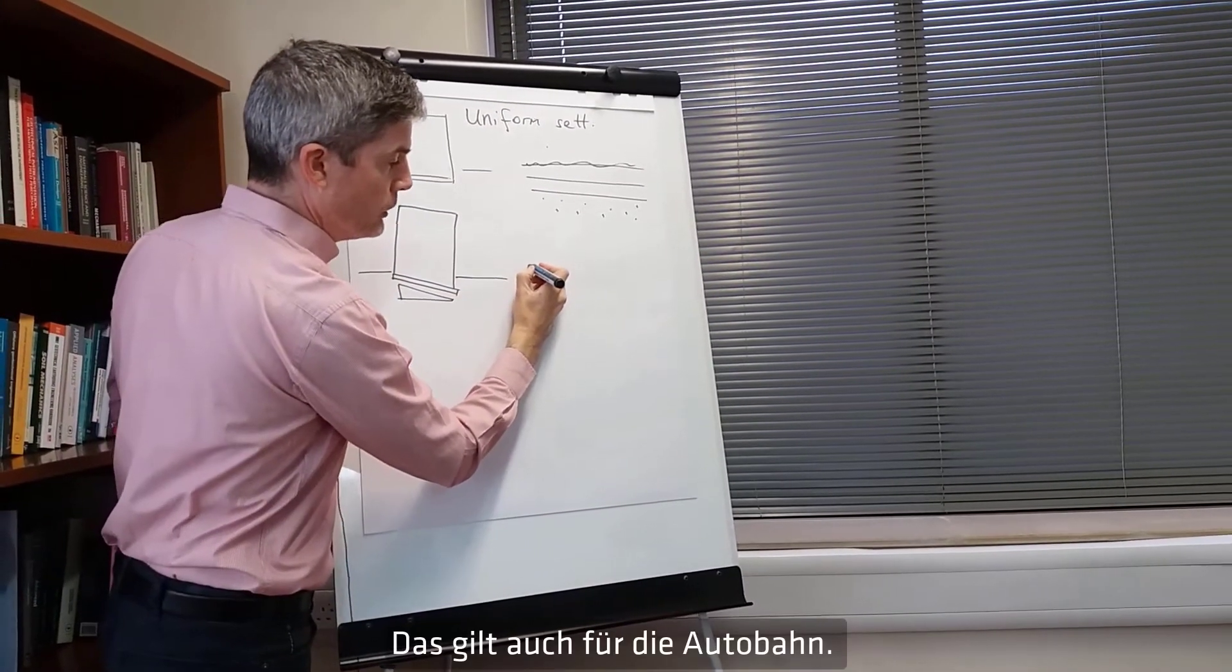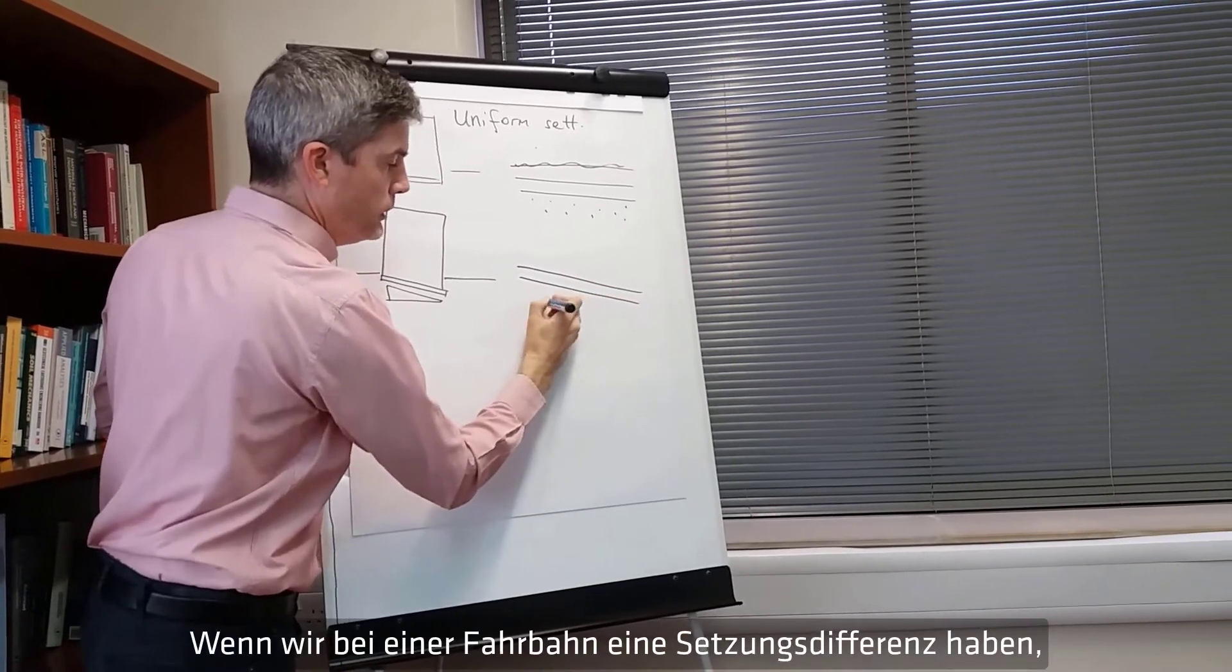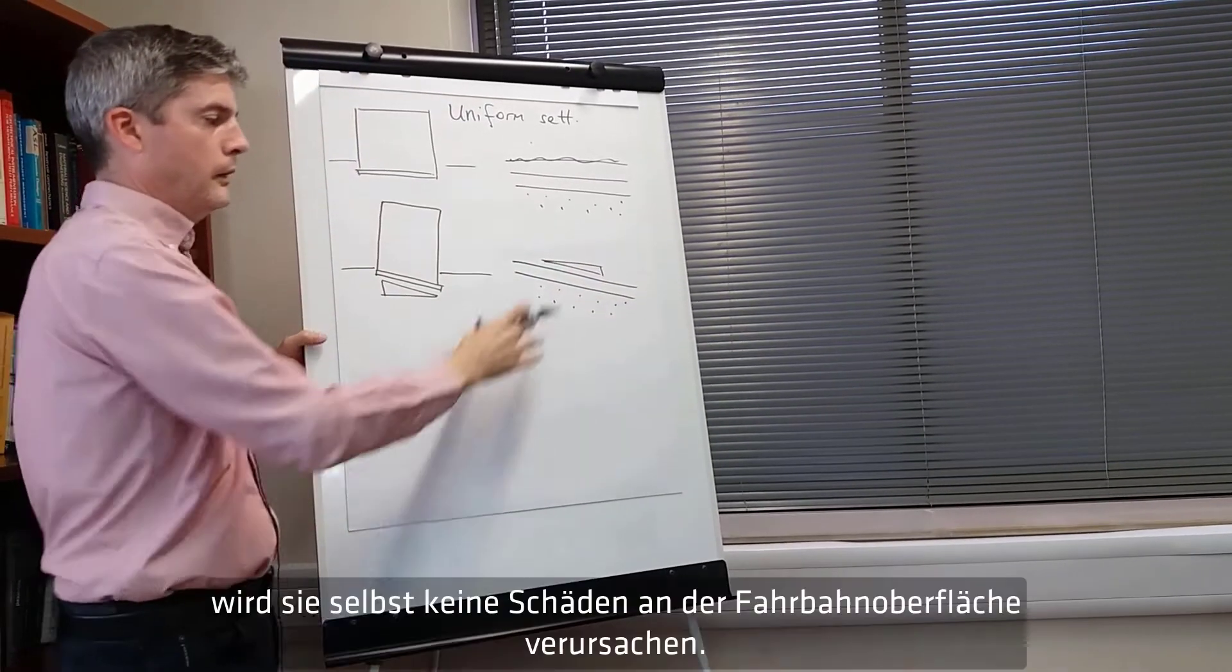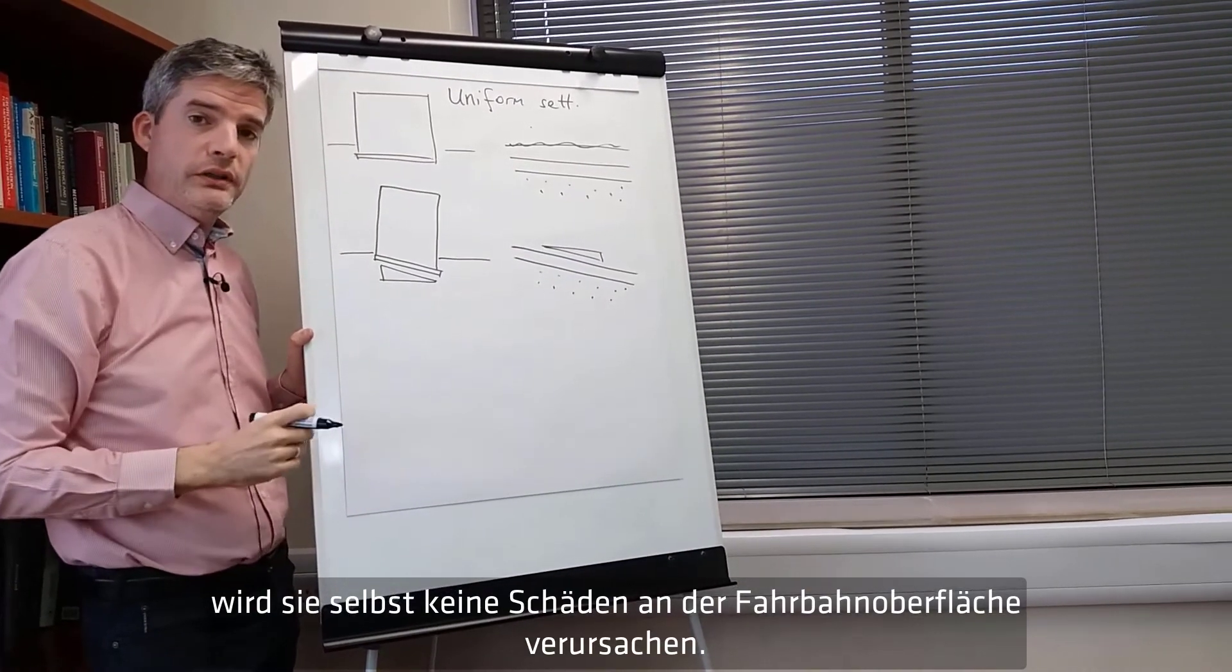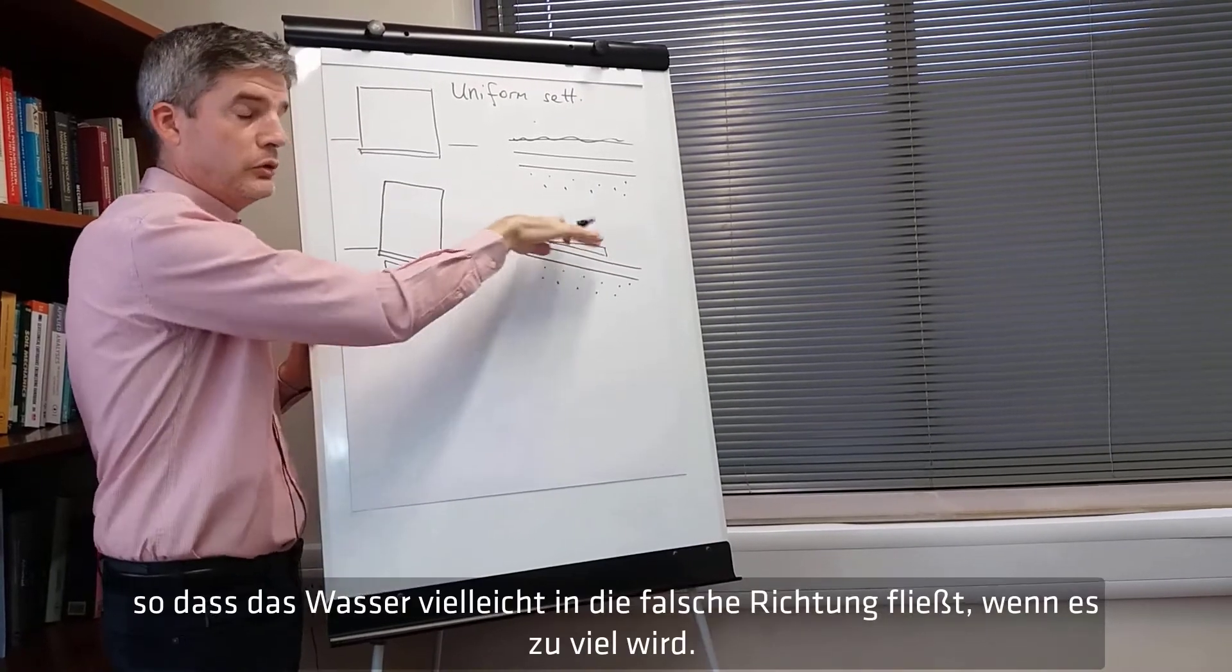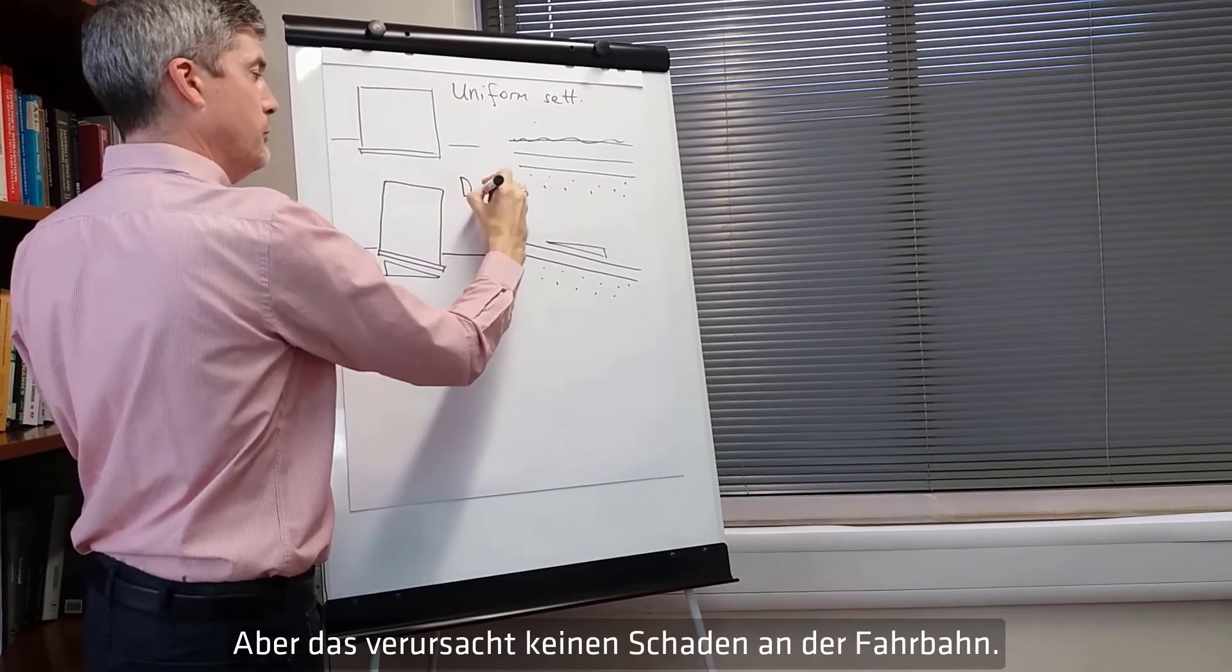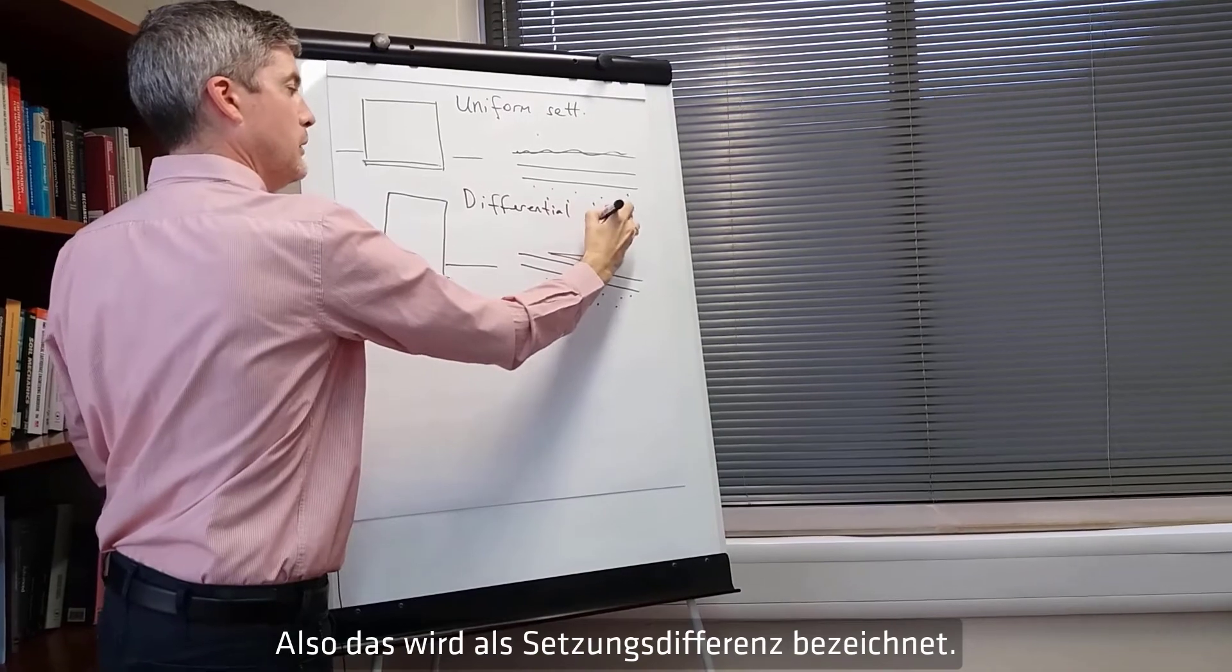The same goes for a highway. If we got a differential settlement of a highway pavement that's not going to cause any damage to the pavement surface on its own. You might lose some of the falls for drainage so the water might flow in the wrong direction if it gets too big. But that's not going to cause damage to the pavement. So that is called differential settlement.